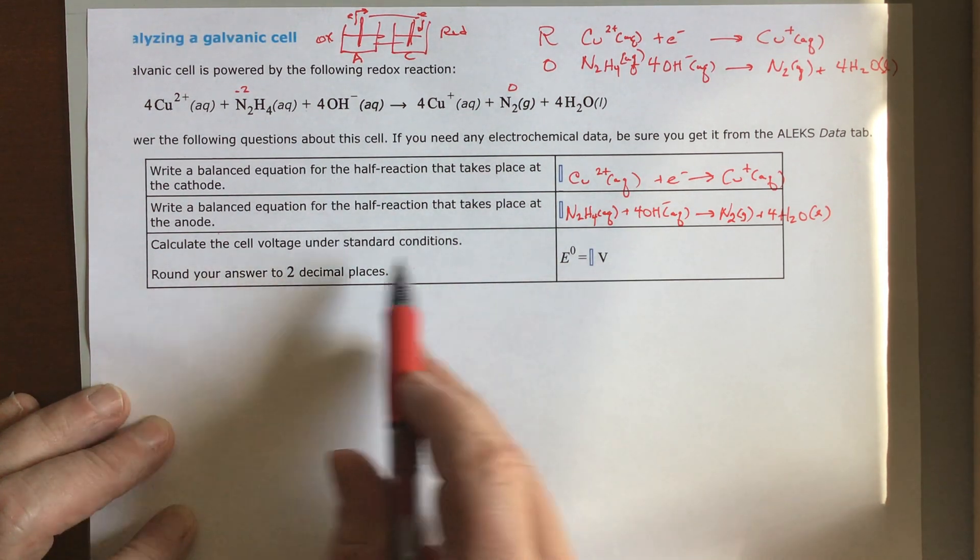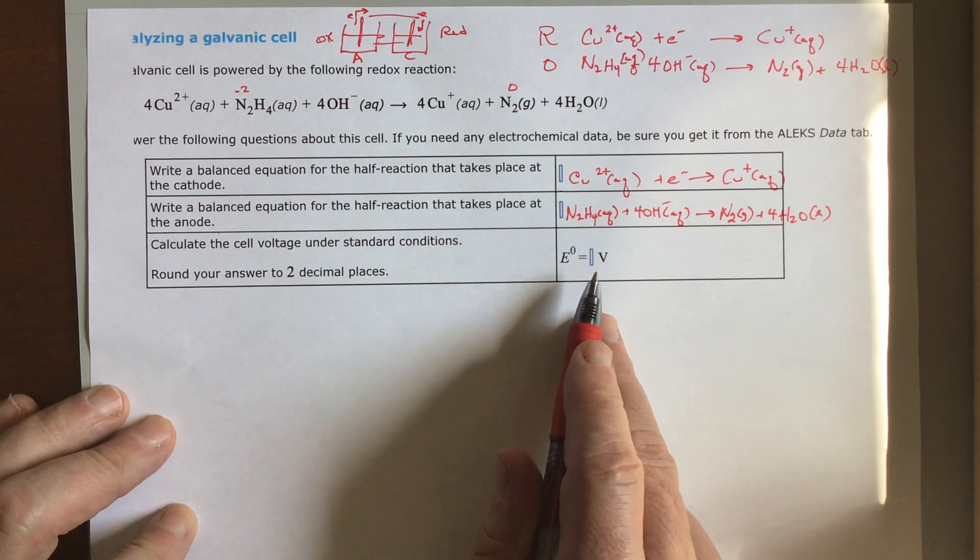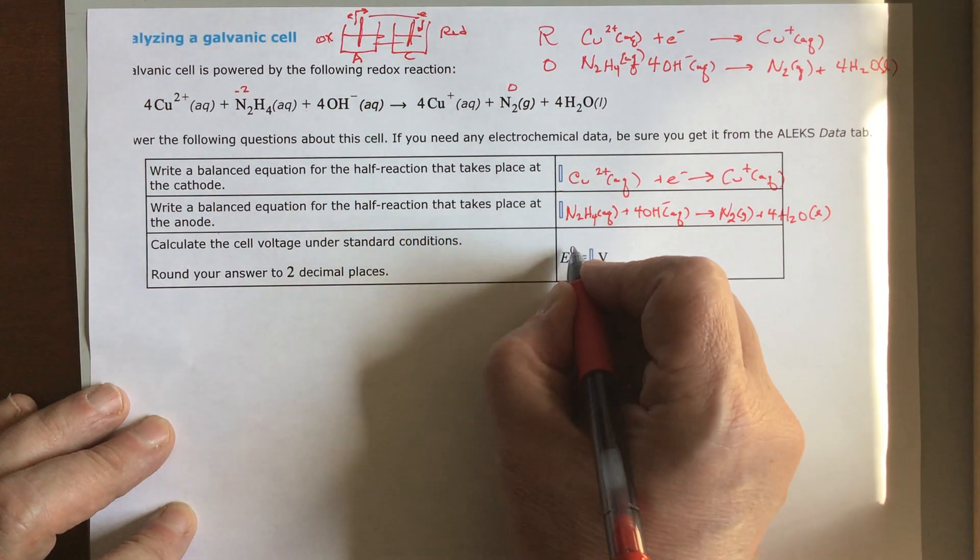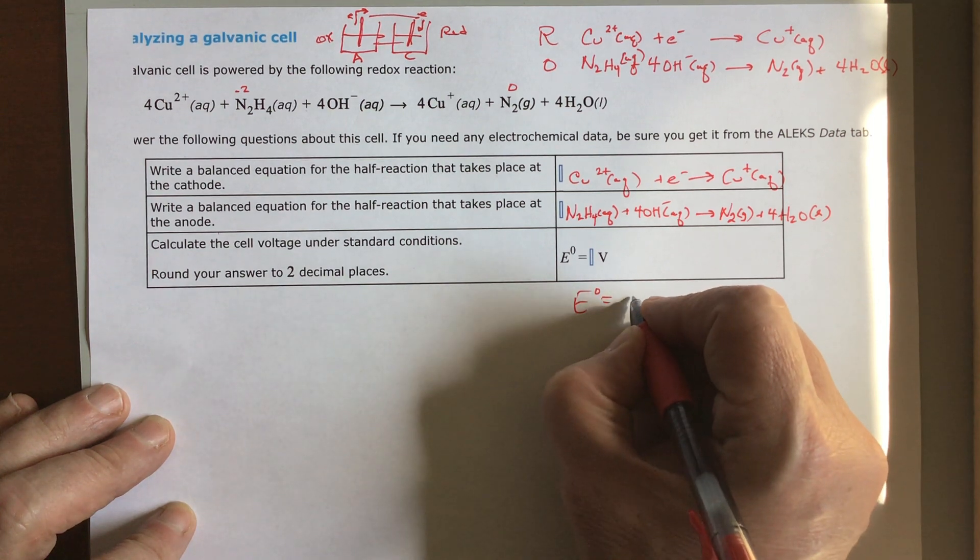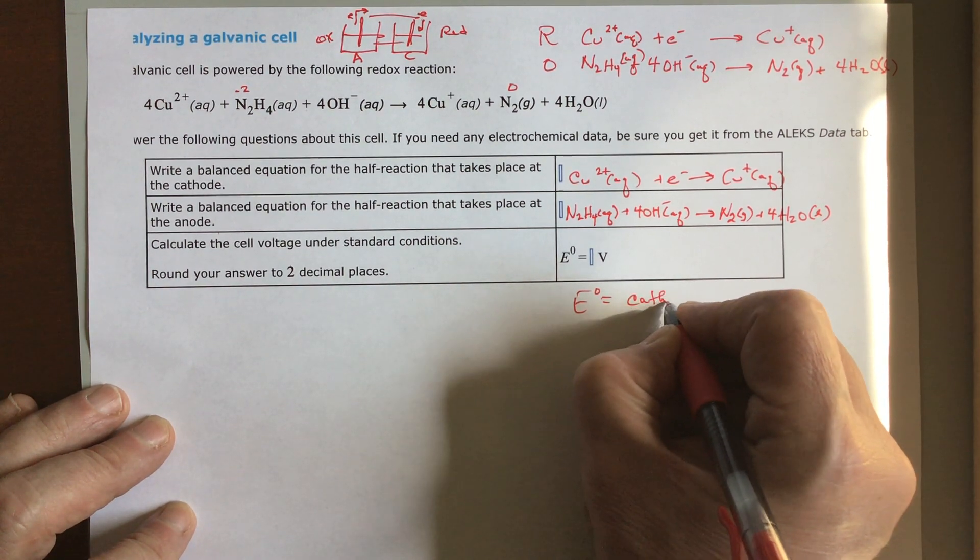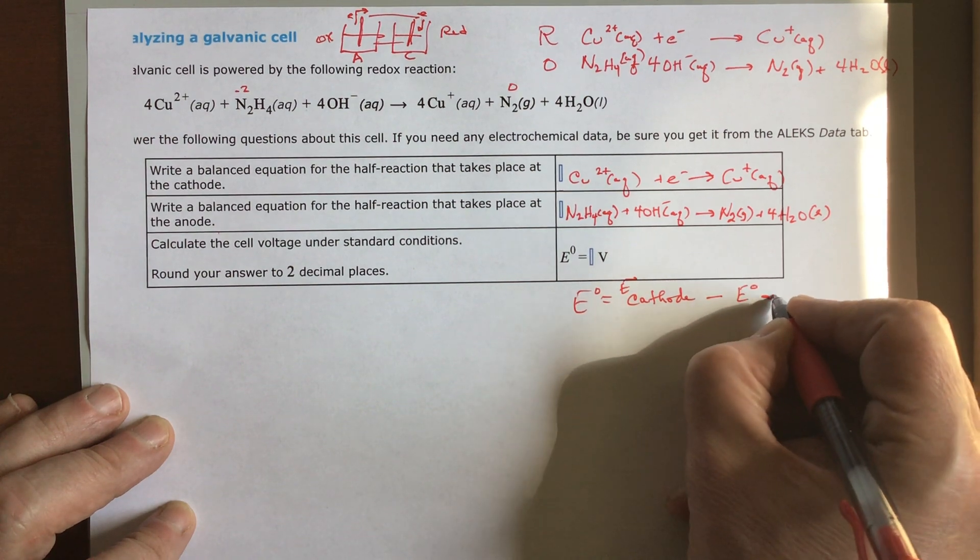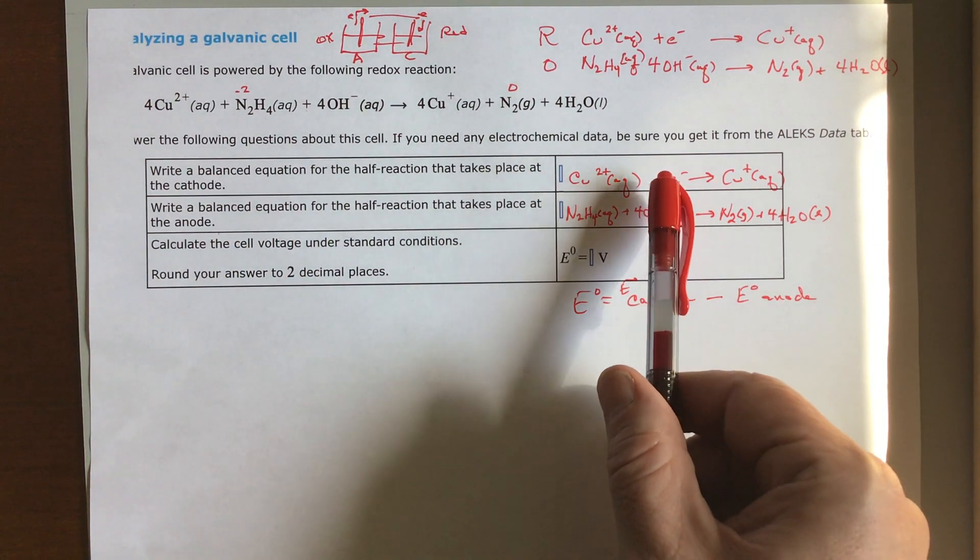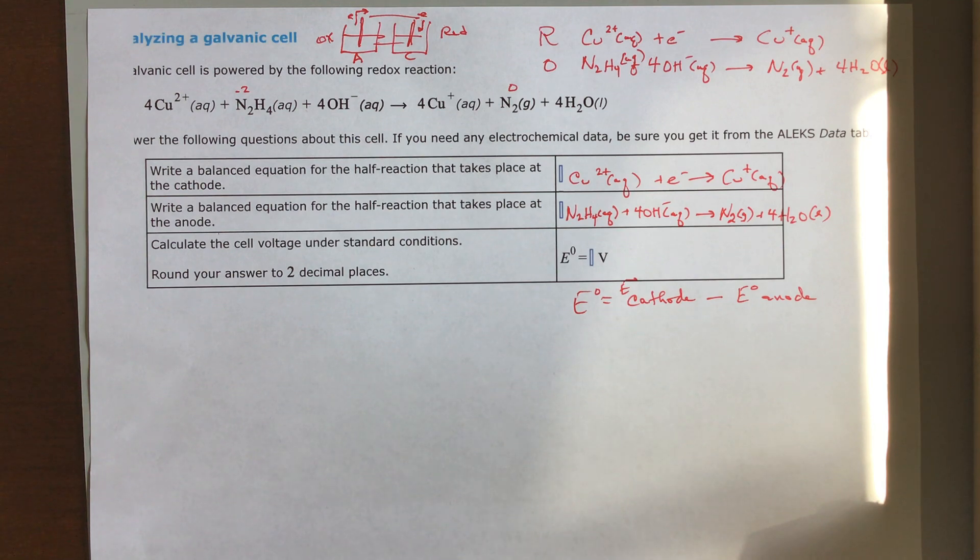The last question, which is very scary, but it's easy when you realize what you're asked to do. They're going to say, what is the cell voltage, standard cell voltage? That's what your little knot is. E°, the standard cell potential, is going to be the voltage at your cathode minus the voltage at the anode. So you're simply going to go to the data table for the standard potentials and look them up.